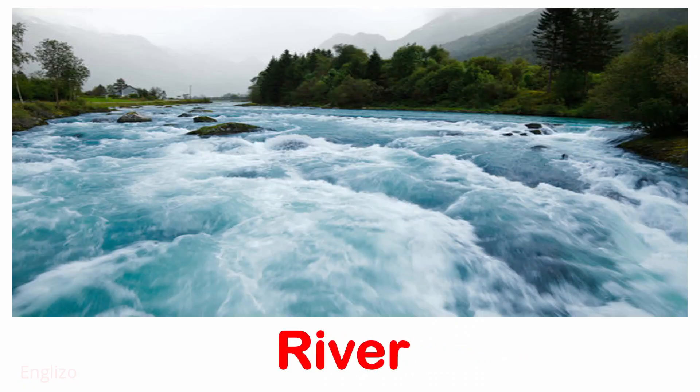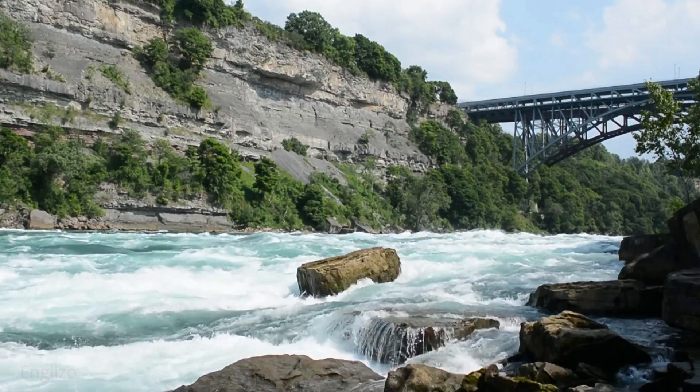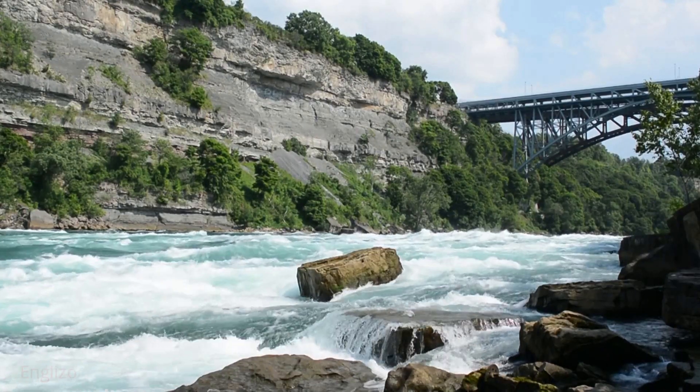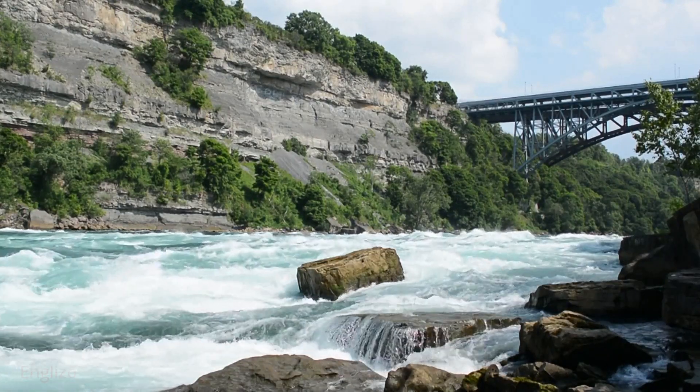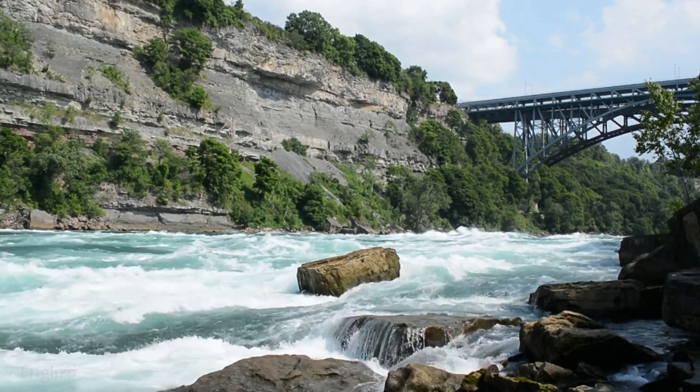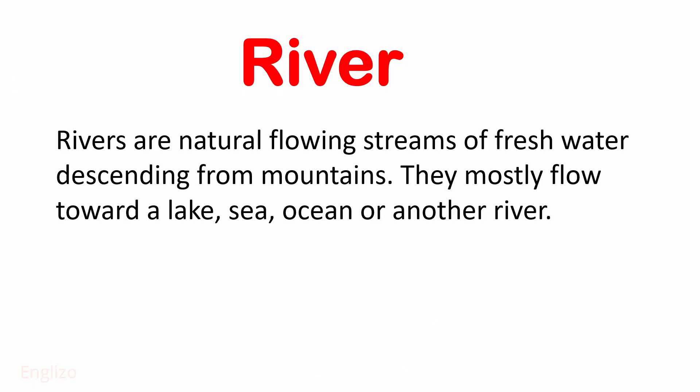River: Rivers are natural flowing streams of fresh water descending from mountains. They mostly flow towards a lake, sea, ocean, or another river.